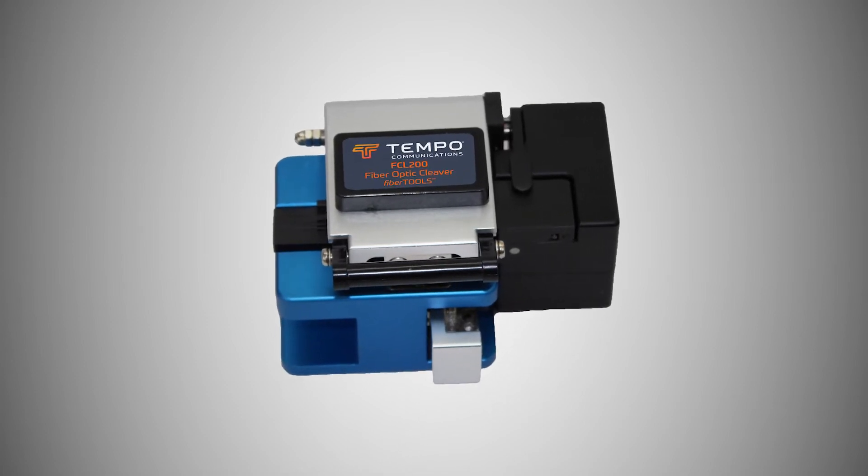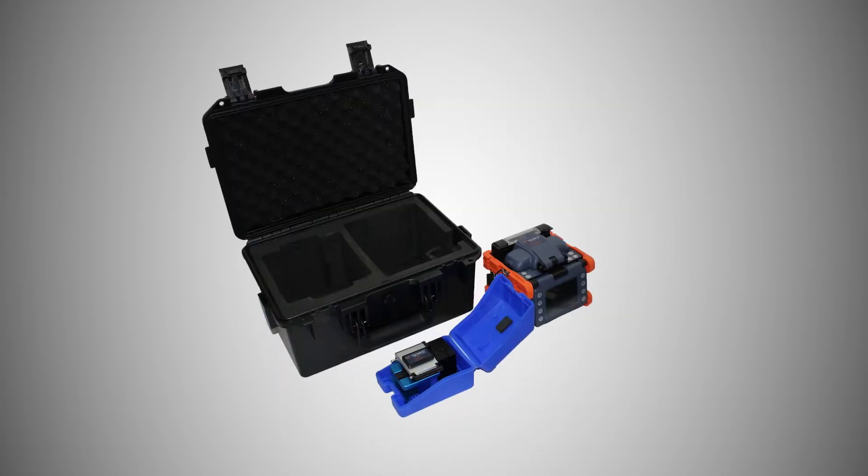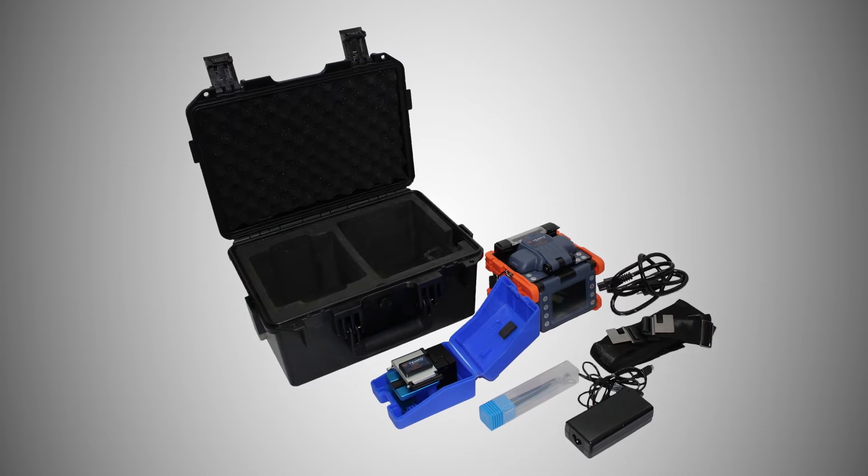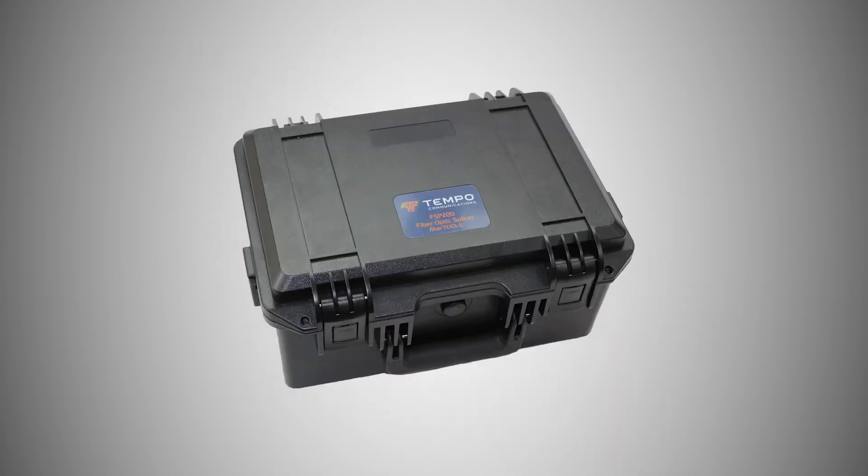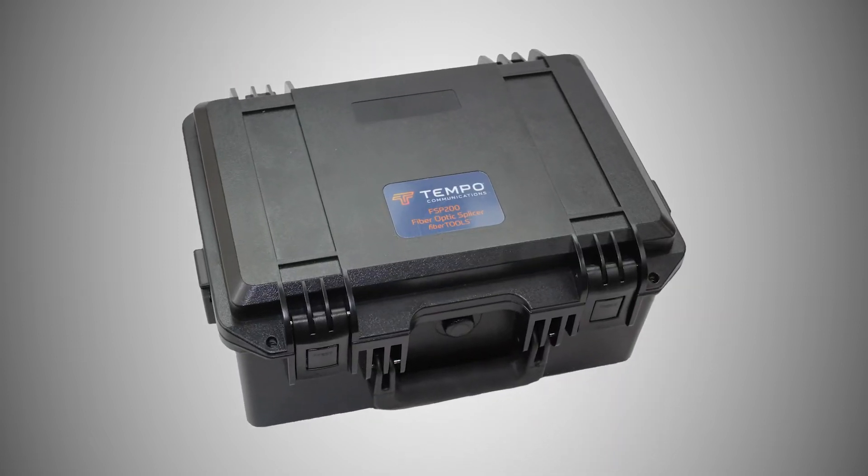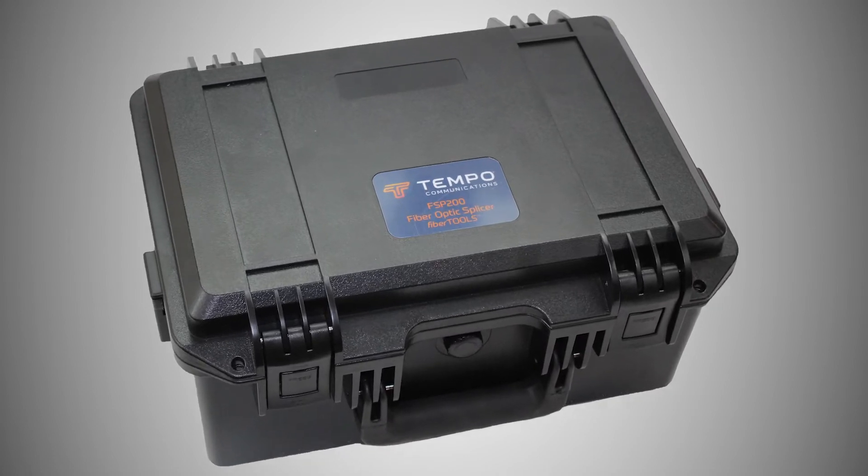The kit also includes the FCL200, the PA1171 5-in-1 stripper, and an extra battery all packaged into a ruggedized carry case for safe travel and storage.